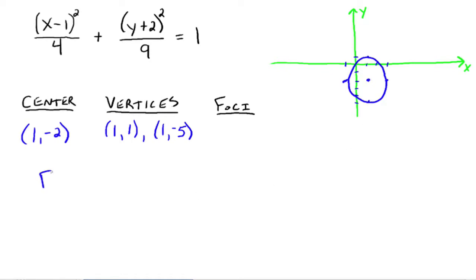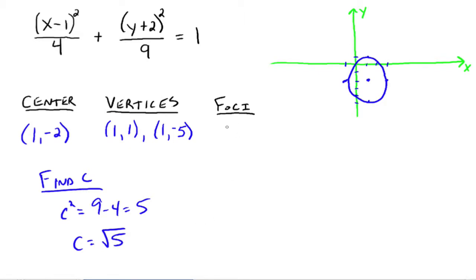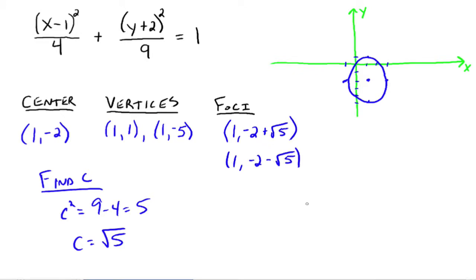To find the foci, find C. C squared equals bigger number minus smaller number: 9 minus 4 equals 5, so C equals the square root of 5. The foci are on the vertical major axis, so we add and subtract C to the Y part of the center: 1, negative 2 plus square root of 5, and 1, negative 2 minus square root of 5.